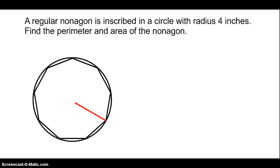It says a regular nonagon is inscribed in a circle with a radius of four inches. Find the perimeter and area of the nonagon. So here I have my inscribed nonagon drawn, and my center is marked here. I'm going to write this as my four inches, so that is the length of my radius. We have to find two things, the perimeter and the area of the nonagon. And actually you need the perimeter in order to find the area anyway.